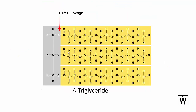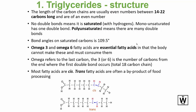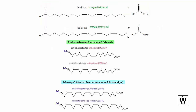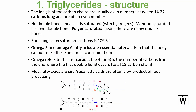You can see the ester link here — it's now been formed. For triglycerides, you also need to know omega-3 and omega-6 fatty acids. Going three carbons up from the end gives you omega-3: one, two, three — that's a double bond. For omega-6, go six carbons up: one, two, three, four, five, six. Note that the exam may swap the carboxylic acid group to the left or right — pay attention to that.